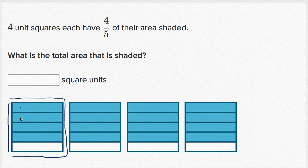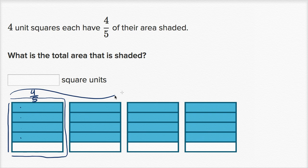So this is a fifth, that's another fifth, that's another fifth, and that's another fifth. So we have four-fifths shaded in. And we have these four-fifths four times. So you could view this entire shaded area as four times four-fifths.